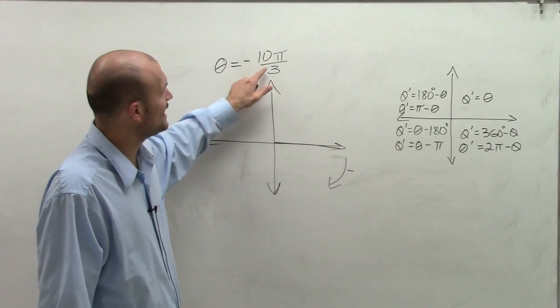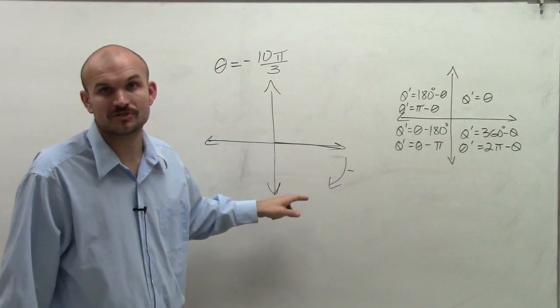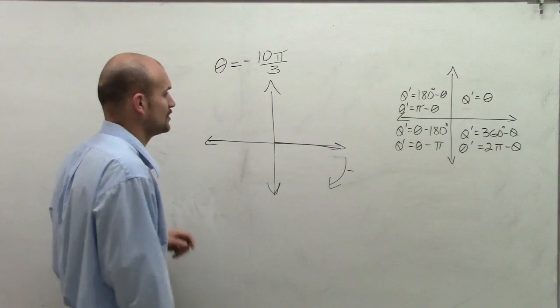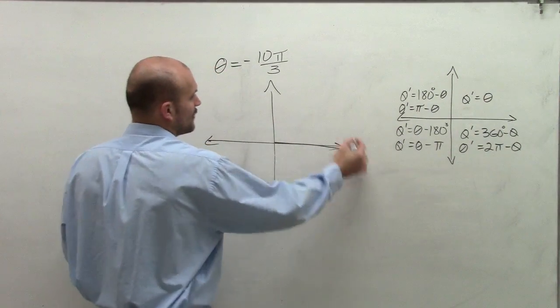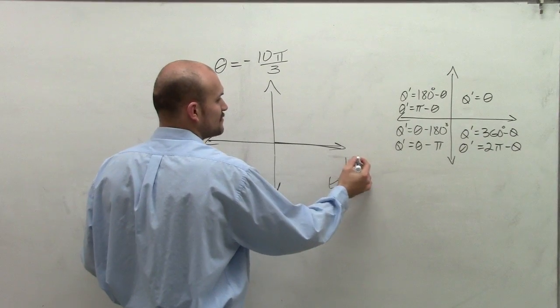And I already noticed that this angle is going to be a couple revolutions, or it's at least going to be over one revolution of the unit circle. The reason why I know that is because if I was going to go all the way around the circle, I would go around, remember, 2 pi.